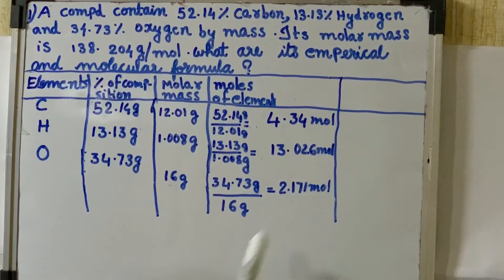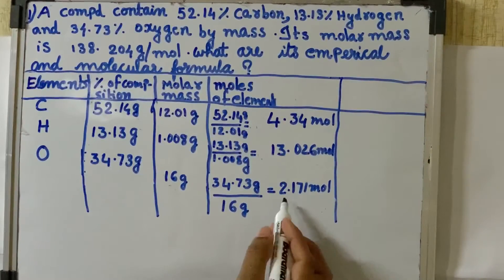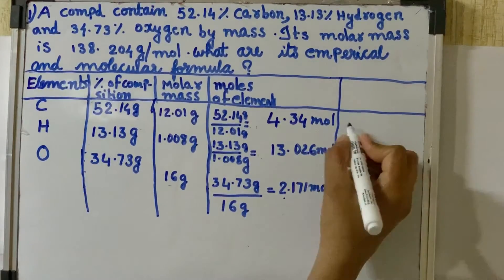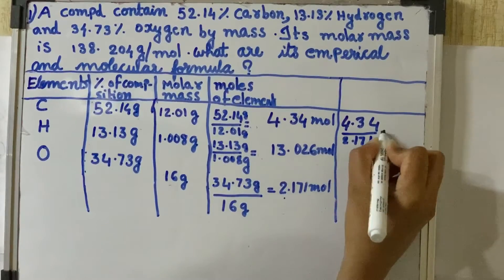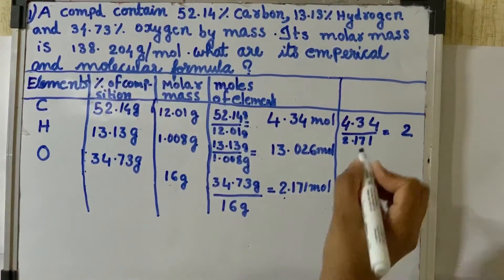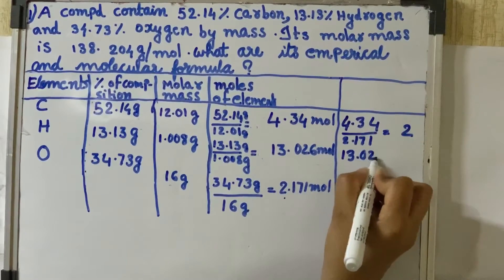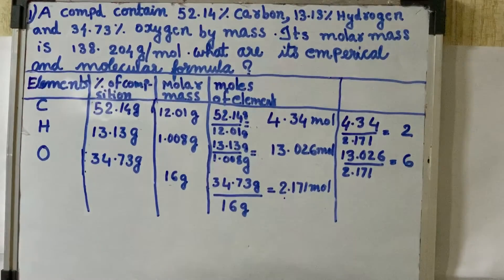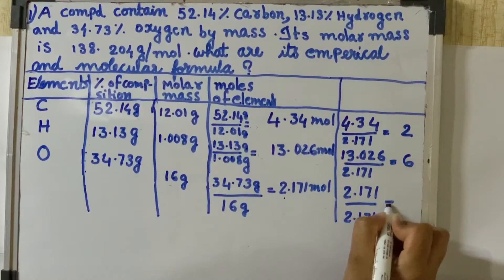We have 2.171 moles of oxygen. Now we divide each by the smallest value, which is 2.171. Carbon: 4.34 divided by 2.171 equals 2. Hydrogen: 13.026 divided by 2.171 equals 6. Oxygen: 2.171 divided by 2.171 equals 1.